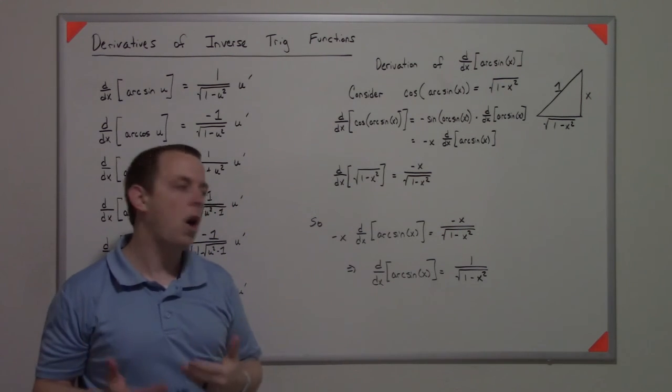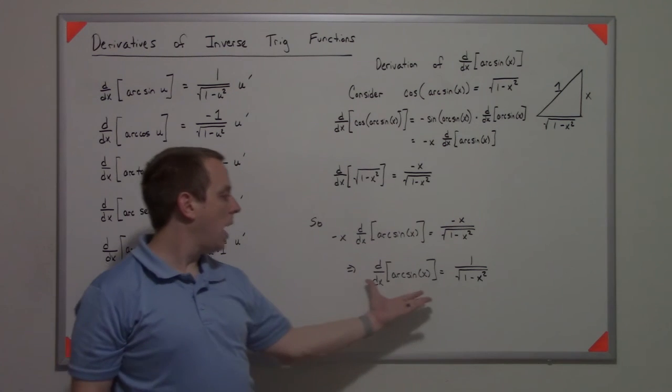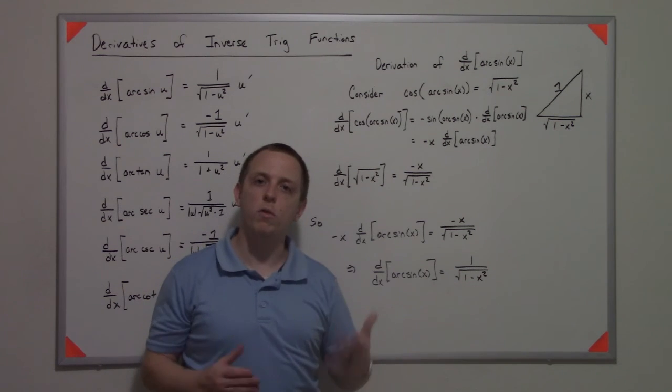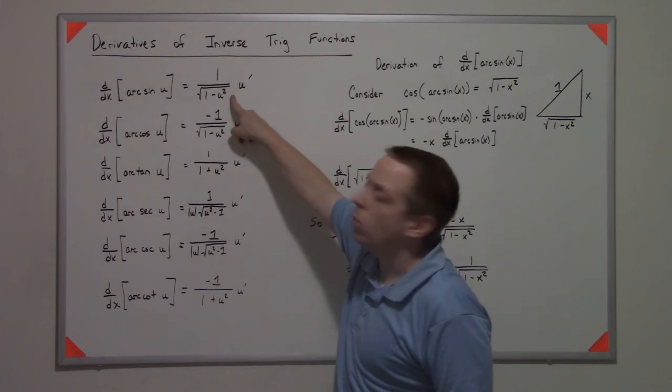I know that this expression equals that expression. What I notice is that both of them have a negative x in common. If I cancel the negative x's, I get that the derivative of arc sine of x is 1 over the square root of 1 minus x squared, which matches what we have here.